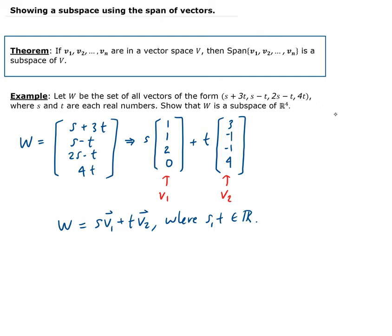This shows that W is the set of all vectors in that form, where it can be expressed as a linear combination of V1 and V2.